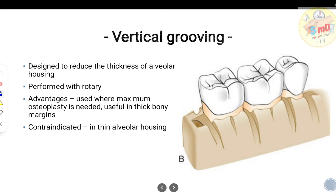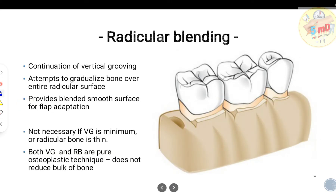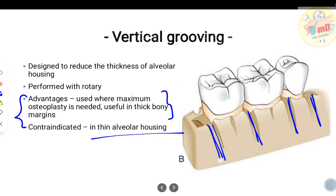Vertical grooving is designed to reduce the thickness of the alveolar bone, so it is not used in thin alveolar housings. It is performed with rotary instruments such as burrs, and is most useful where maximum osteoplasty is needed — particularly in thick bony margins.